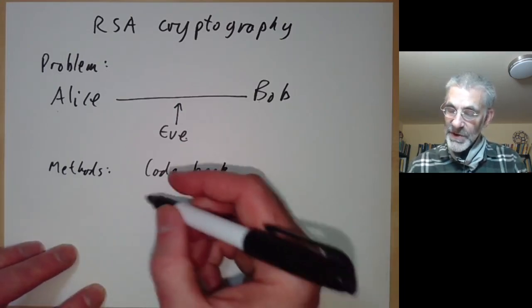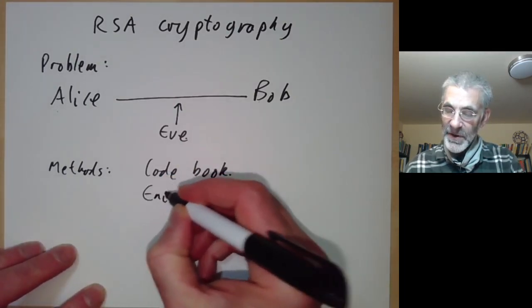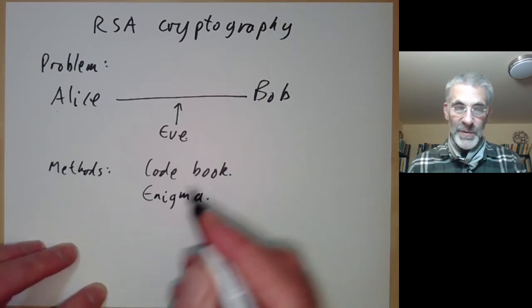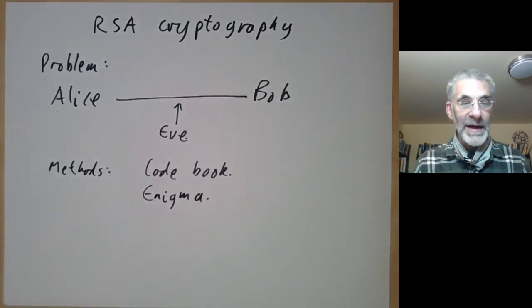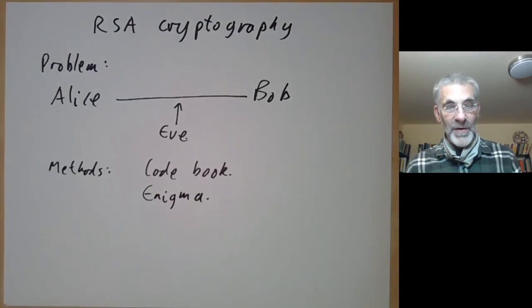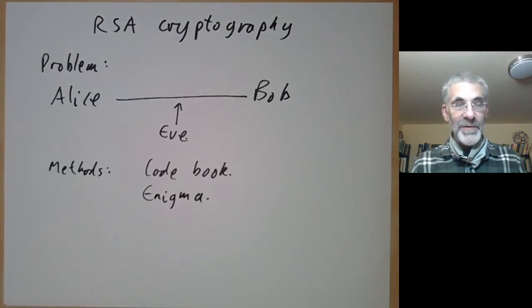Code books are a little bit cumbersome. The Germans had something called an Enigma machine, which was a very ingenious electromechanical device for turning messages into apparent gibberish.